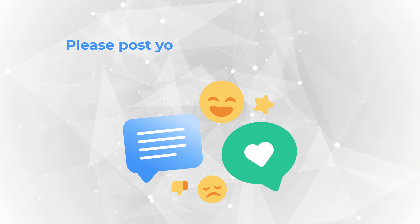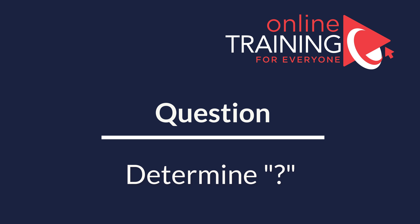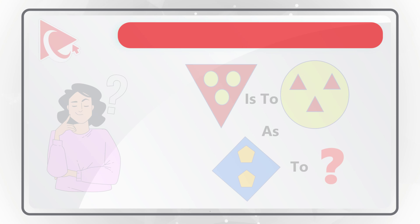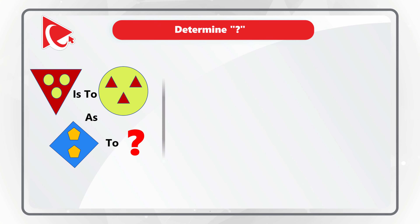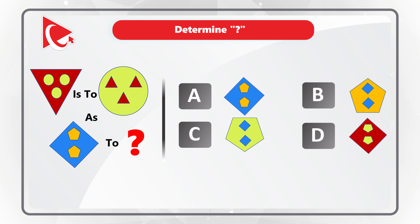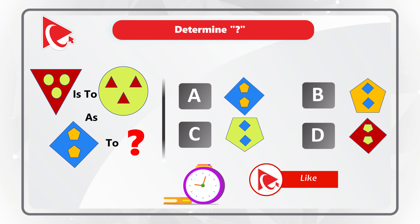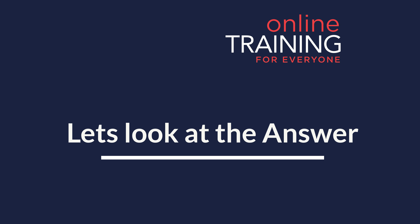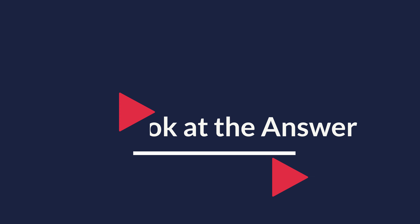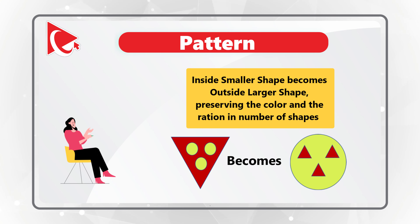This next question requires you to determine the relationship between shapes and identify which shape has a similar relationship to a rectangle. If you take a close look, you will see that there are smaller shapes inside the larger shapes, and you have four different choices: A, B, C, and D. The pattern here is that the inside shape becomes the outside shape, preserving the ratio of inside to outside shapes.